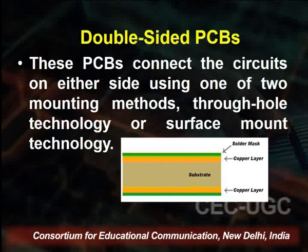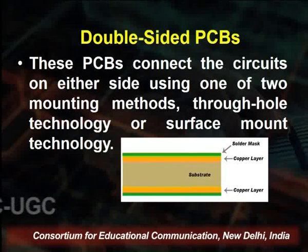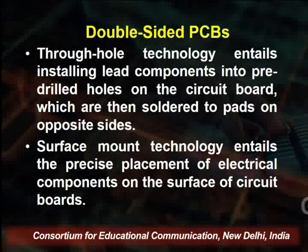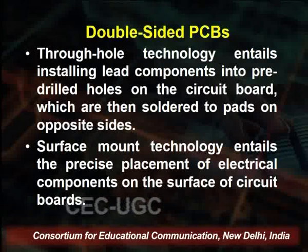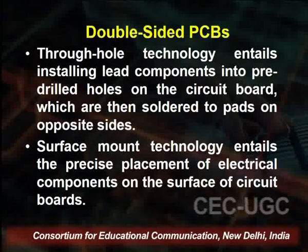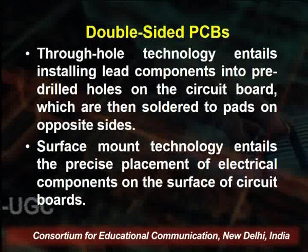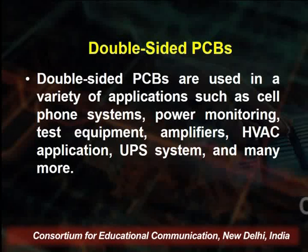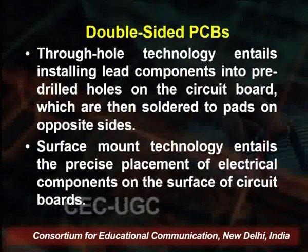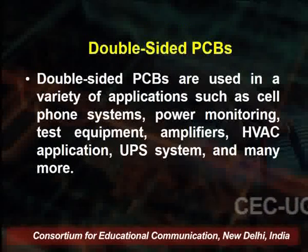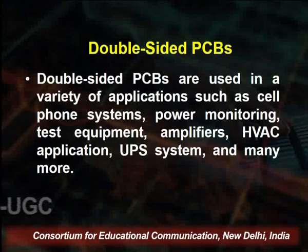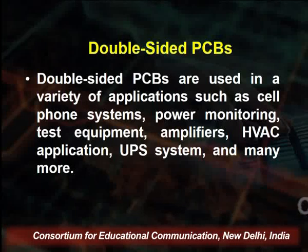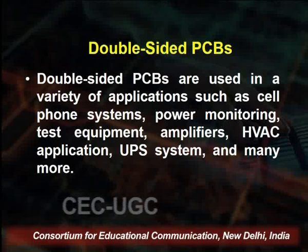Double-sided PCB boards are designed through hole technology or surface mount technology, with copper layers on both sides. Through-hole technology entails installing lead components into pre-drilled holes on the circuit board, which are then soldered to pads on the opposite side. Surface mount technology places electronic components on the surface of the circuit board. PCBs use both technologies for fabrication and are used in applications such as cell phones, power monitoring and test equipment, amplifiers, HVAC systems, and UPS systems.